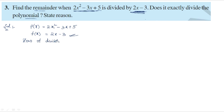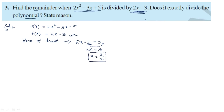Zero of divisor: 2x minus 3 equals 0. Sending 3 to the other side gives 2x equals 3, so x equals 3 by 2.